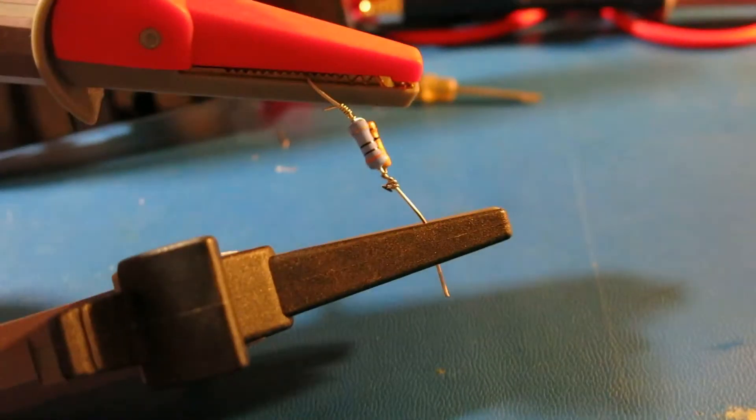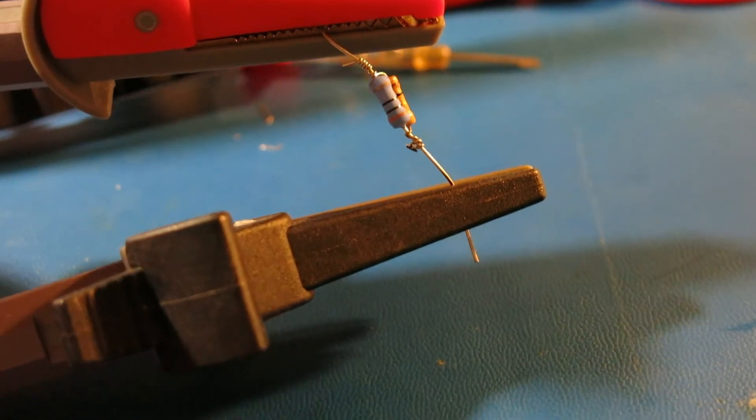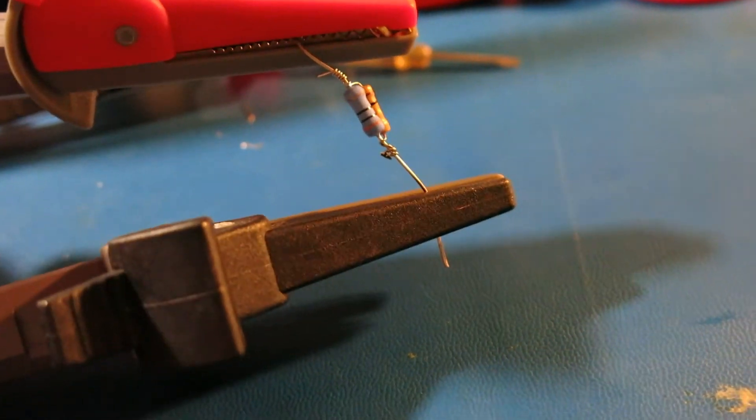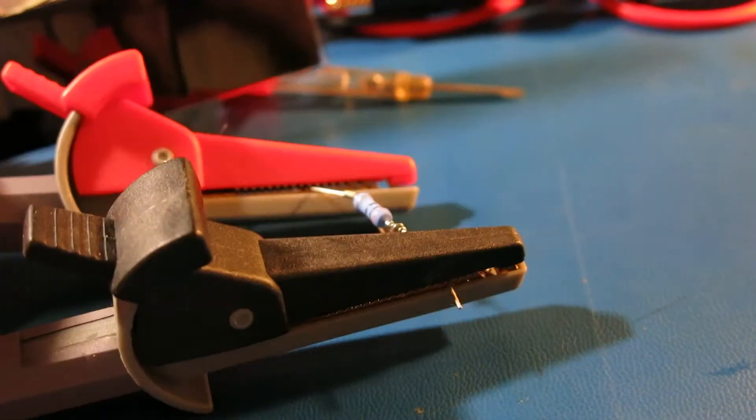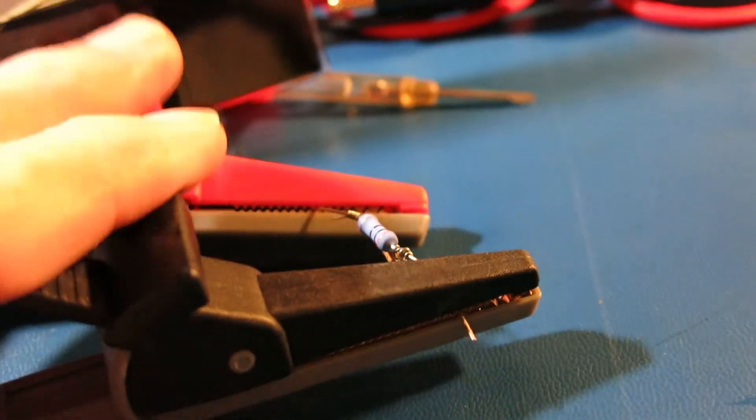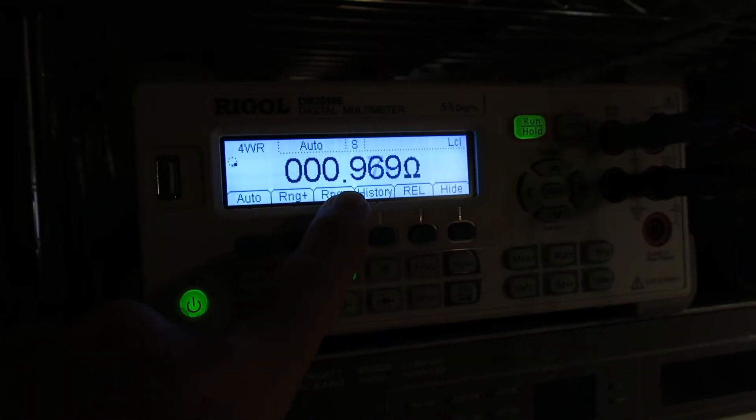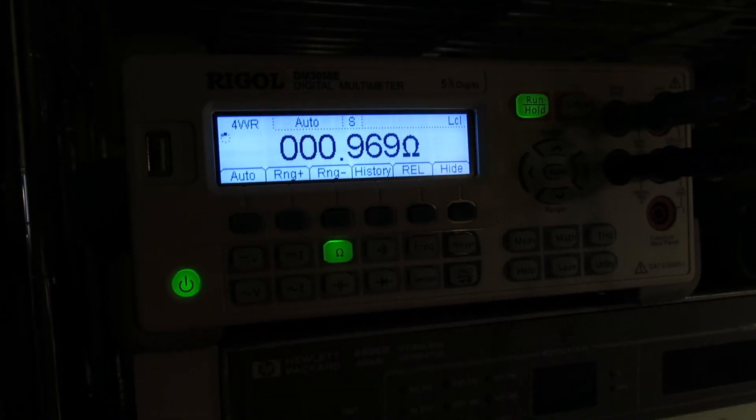If you do some math, you can find that a 30-ohm resistor and a 1-ohm resistor, those are common values. Well, that turns out to be pretty close to the shunt resistor value of 0.968 ohms. So I'm using a four-wire measurement. The measurement is 0.97 ohms. That's pretty close.